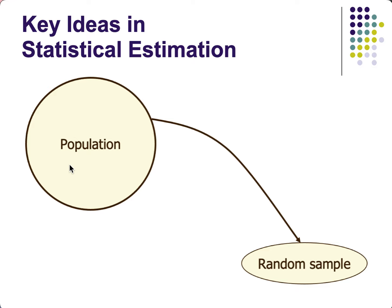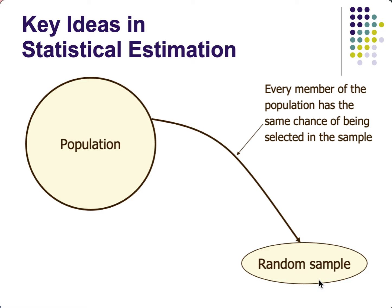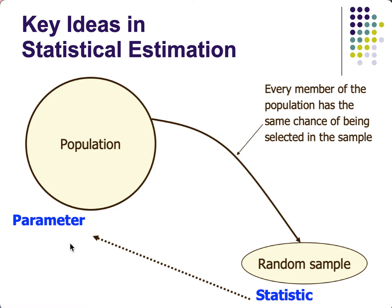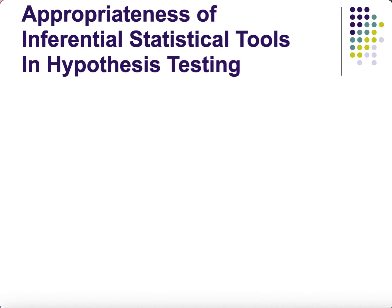The key concept of statistical estimation is: we cannot gather everybody's data from the population, so we get a random sample — every member of the population has a chance to be included. Any characteristic from the sample is a statistic; any characteristic from the population is a parameter. The process of taking a statistic and representing it as a parameter is called estimation. This is just a scratch on the surface — we will focus on hypothesis testing going forward.